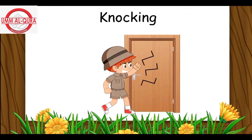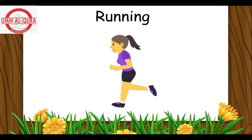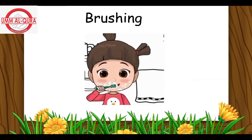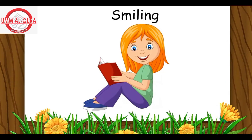The boy is knocking at the door — the word knocking is an action word. The girl is running — the word running is an action word. The man is skipping a rope — the word skipping is an action word. The girl is brushing her teeth — the word brushing is an action word. The girl is smiling — the word smiling is an action word.